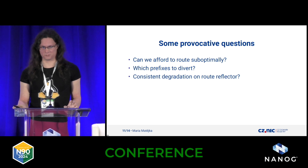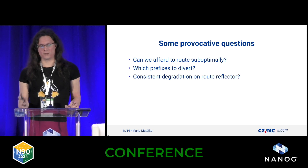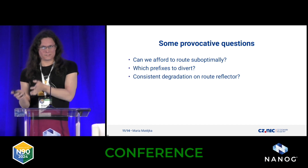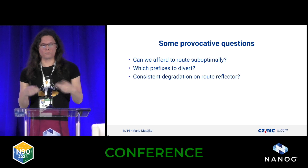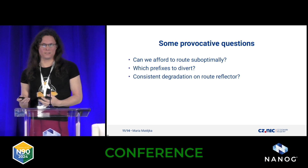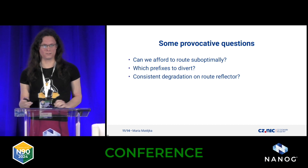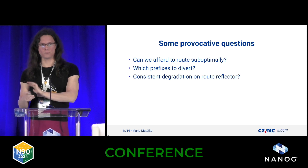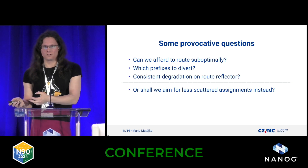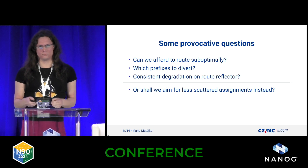I also have some provocative questions. Is it okay to route suboptimally, and when? If yes, which prefixes should go the worst path? Are we going to hit some routing loops — when is this possible? Or at least if we consistently degrade the routes on route reflectors so all your network is misrouting the same way, is it sufficient? Or do we get some routing loops outside? I don't know — I was not researching that. Or we could aim for less scattered assignments and look at whether IP prefixes couldn't be swapped between companies to actually be joined into bigger blocks.